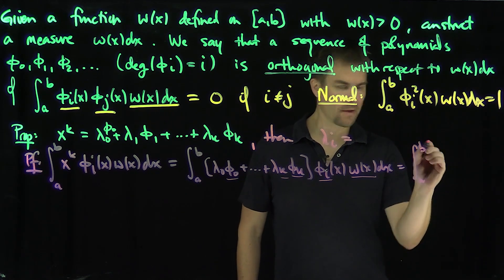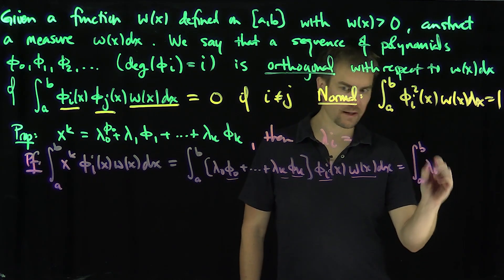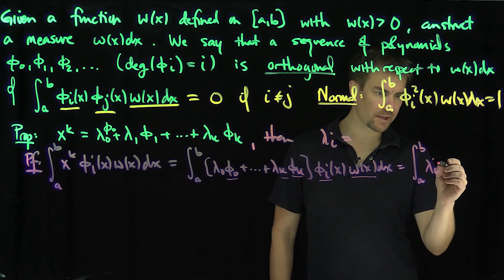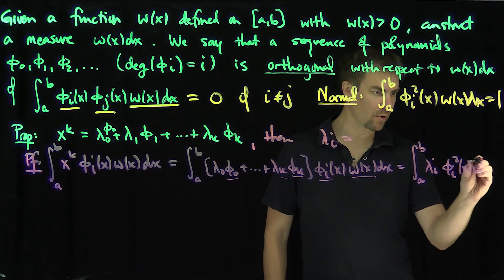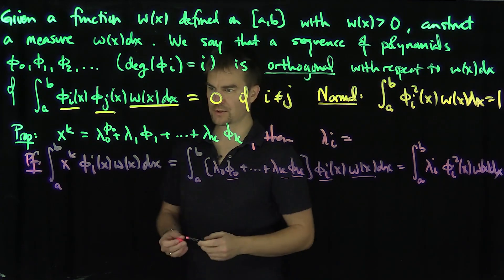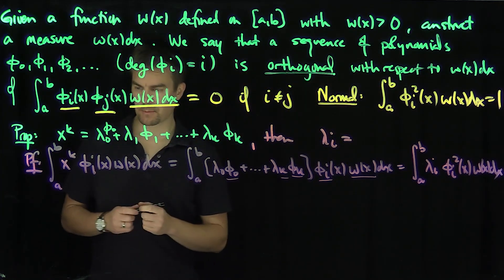It's going to simplify to the integral from a to b of λᵢφᵢ²(x)w(x)dx, and now I can exactly solve for this. So that tells me what my λᵢ is going to be.